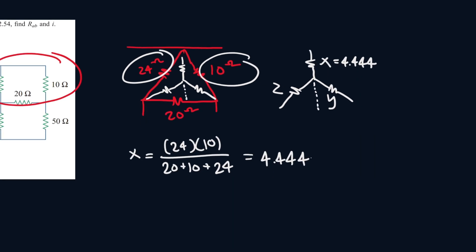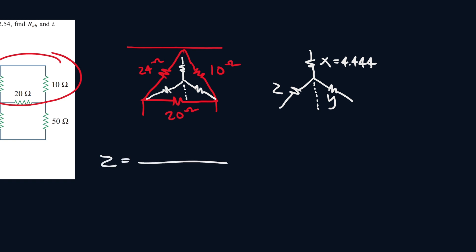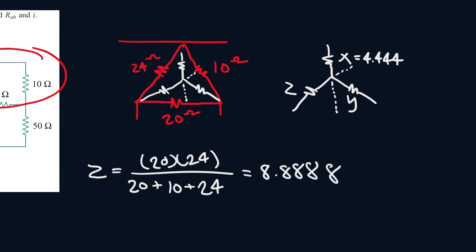Now let's find Z. Again, the denominator is 20 plus 10 plus 24. For the numerator, let's draw a line going the opposite way aligned to Z — the line hits the 10-ohm resistor, so it'll be 20 times 24. That gives us 8.888, so Z equals 8.888 ohms.